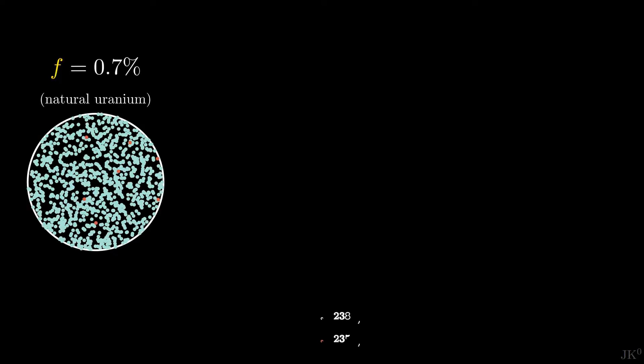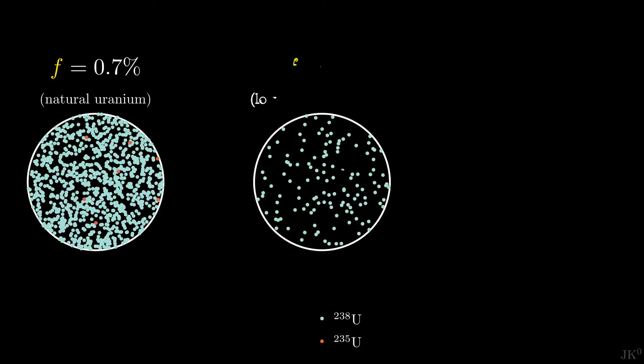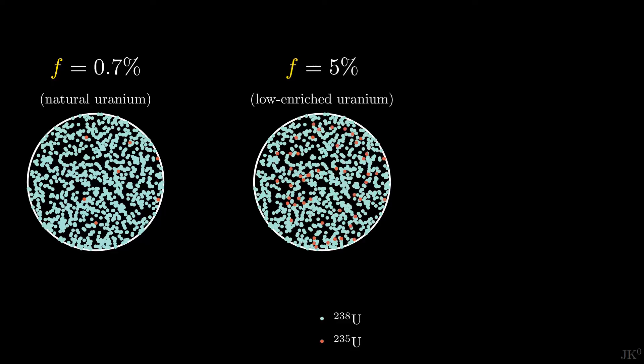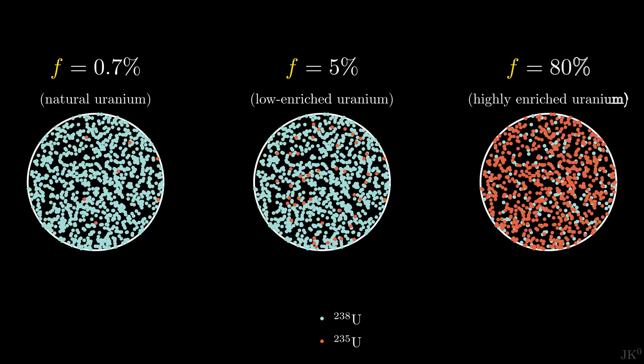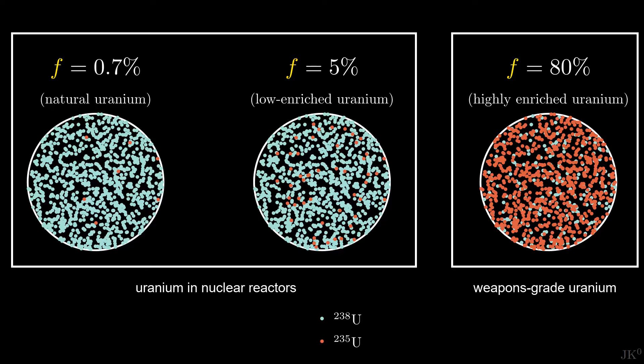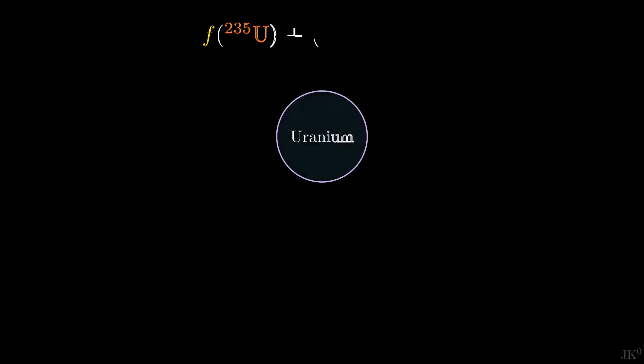In natural uranium, the fraction of U235 is just 0.7%. The process of increasing the fraction of U235 in a lump of uranium is called enrichment. Weapons grade material requires an enrichment fraction over 80%. The amount of enrichment or fraction of U235 content is a crucial factor.